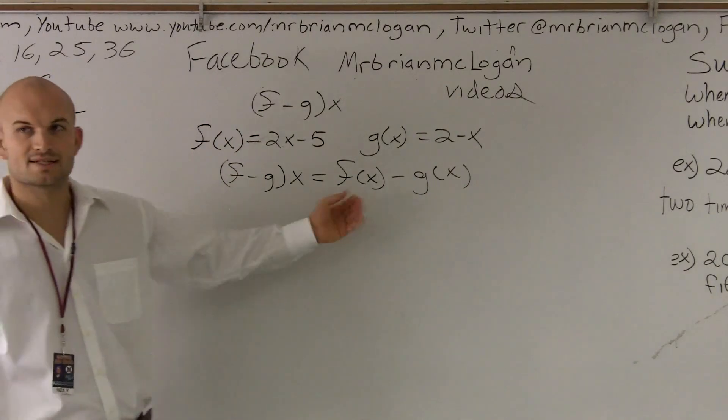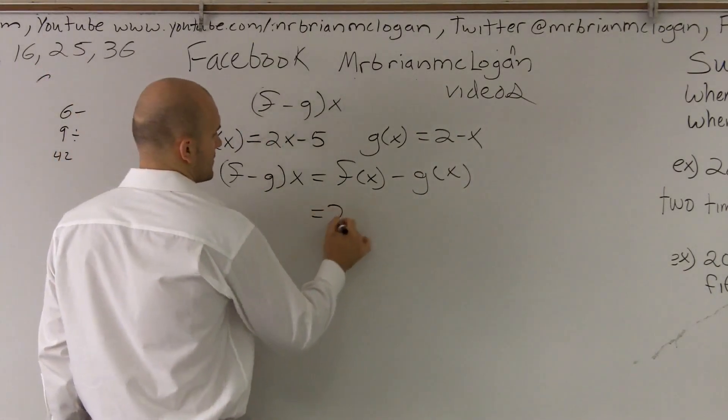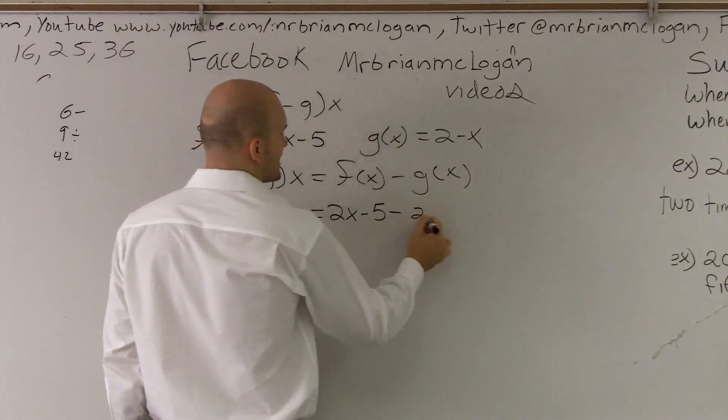So what we're going to do is we're just going to take our f of x function, which is 2x minus 5, and we need to subtract it from our 2 minus x.